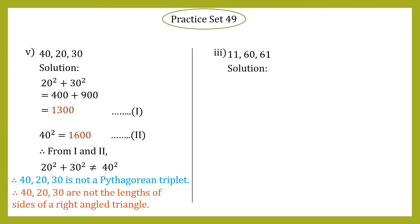Let's go to sub-question 3: sides are 11, 60, 61. Step one: take the sum of squares of the two smaller sides, that is 11 and 60. 11² + 60² = 121 + 3600.